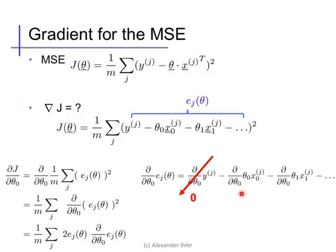This term will have a derivative of x. This term is constant with respect to theta zero, so it will have a derivative of zero, as will the others. This leaves us with just one term here, the derivative of theta zero x zero. And we find that the derivative of e is negative x zero, the zeroth feature.